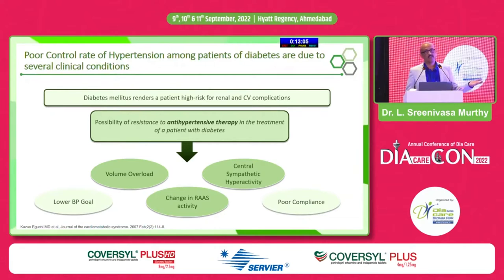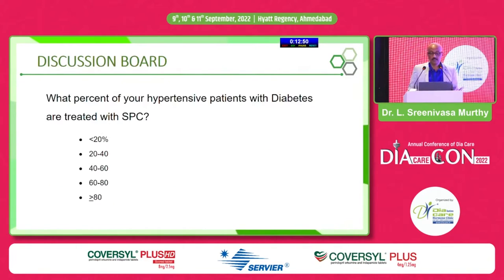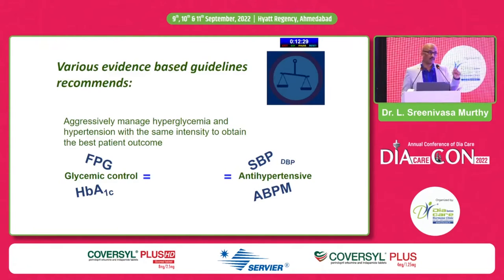We should be catering to our patients about poor compliance with anti-diabetic and anti-hypertensive therapy. What percentage of hypertensive patients with diabetes are treated with a single pill combination to overcome compliance? Most of us don't choose ideal single pill combinations — it's as low as 20–40%. We need to aggressively manage hyperglycemia and hypertension with the same intensity. Remember: chasing HbA1C will not translate into cardiovascular benefits the way chasing BP does.